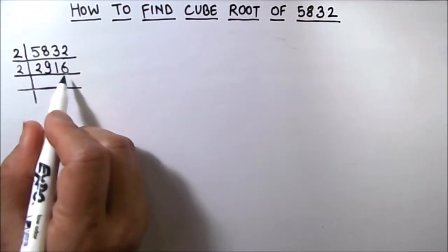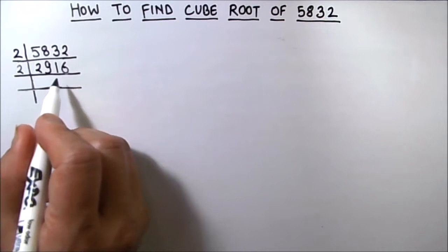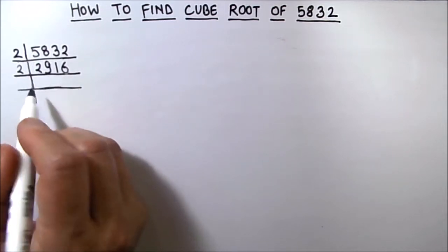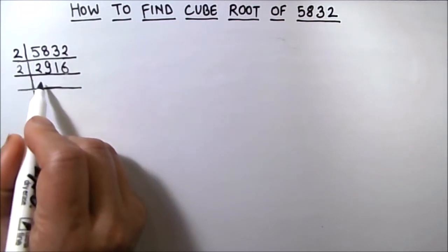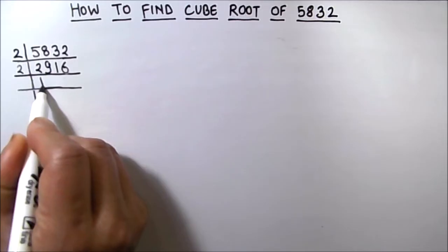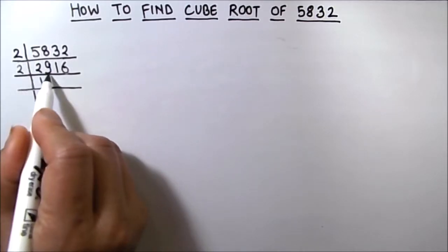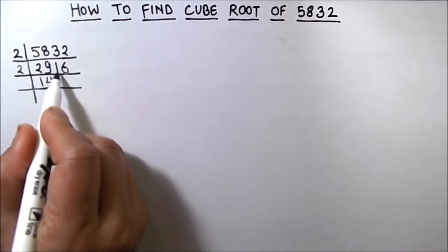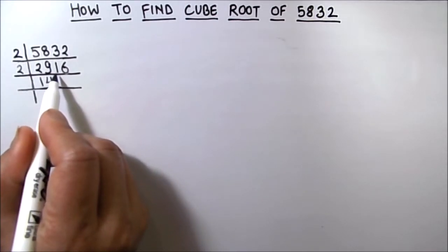Again, this is an even number, so let's divide this number by 2. So 2 times 1 is 2, 2 times 4 is 8, and 1 will be carried over to the next digit, so this becomes 11.